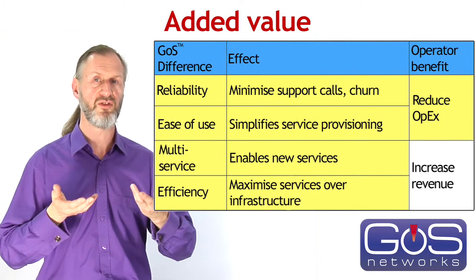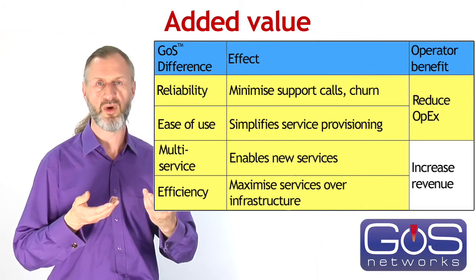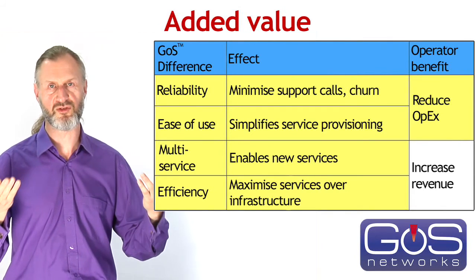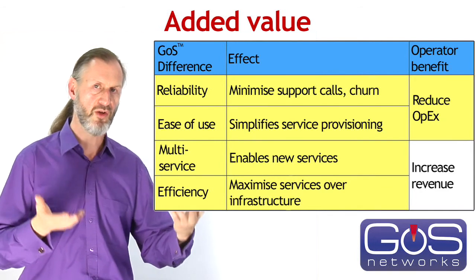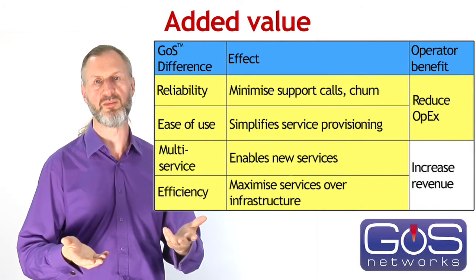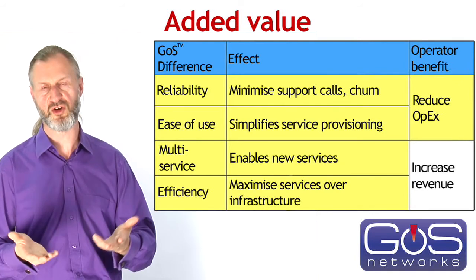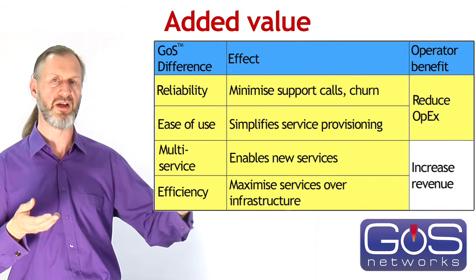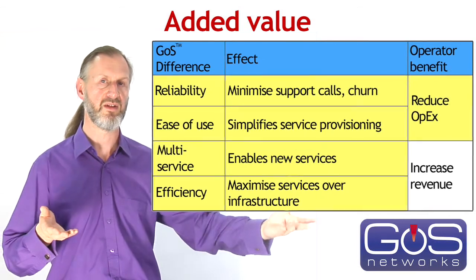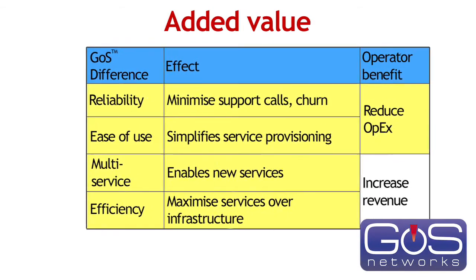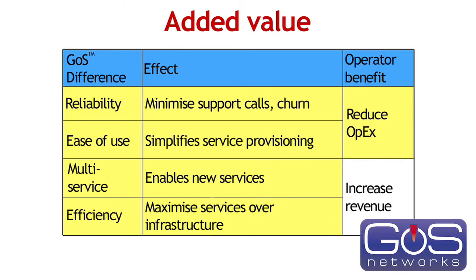Speaking of capacity, GOSS is efficient in its use of that capacity. Where link bandwidth is constrained, GOSS enables that capacity to be used to its maximum. Advanced and converged services can be rolled out over low-rate links without having to enhance capacity, without investing in new fiber or new wires underground, and without upgrading the capacity of switches and routers. In this way, GOSS maximizes the revenue achievable from existing infrastructure, supporting a multitude of services at quantity over that infrastructure.